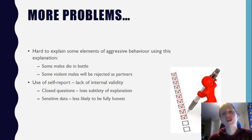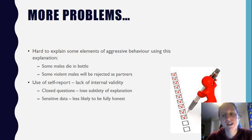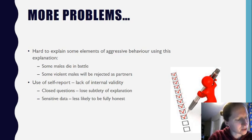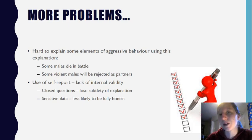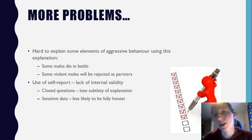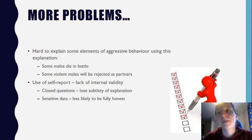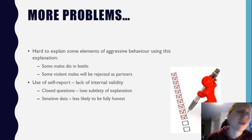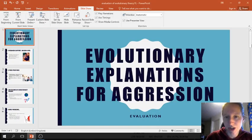If we link that back to the evolutionary explanation of aggressive behaviour, it suggests that although the Shackleton and Wilson studies do support this explanation, their support is weakened because the responses may not have been completely honest, or only approximate to the issue rather than fully capturing it. And that brings us to the end of the evaluation of evolutionary explanations.